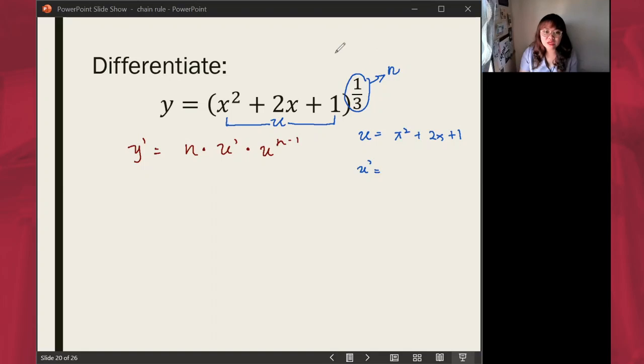it will just be 2x by power rule. How about for this? 2x now will be 2 times 1 because of identity rule for x, so that will just be 2. And then here, 1 will be dropped because the derivative of a constant will just be 0.